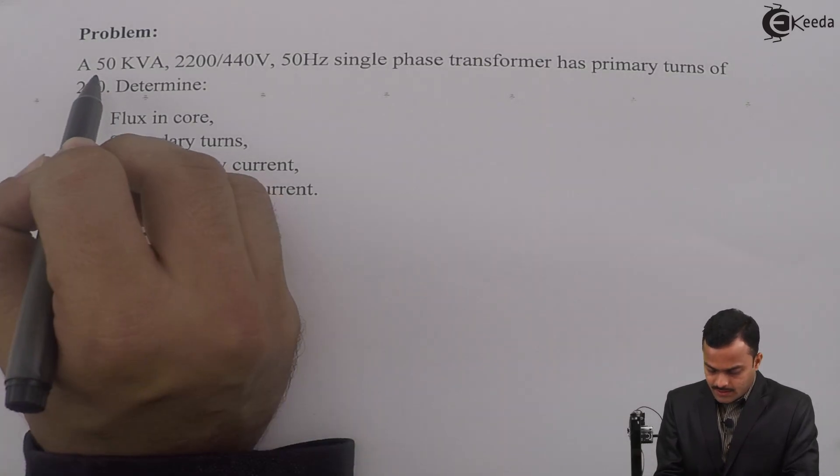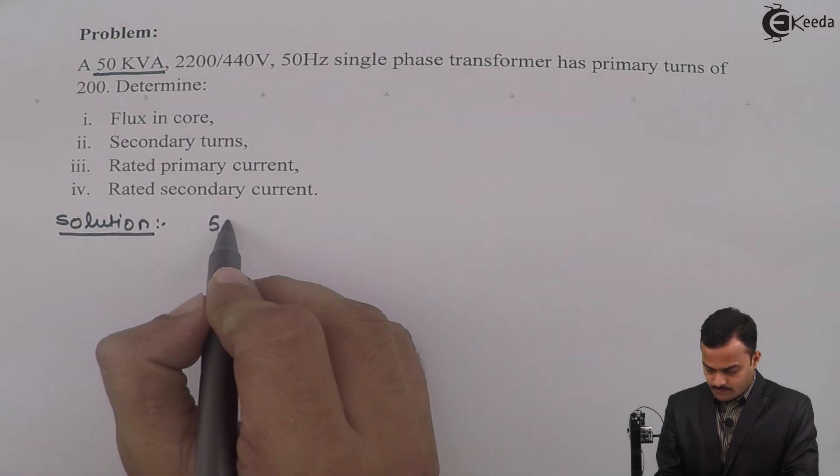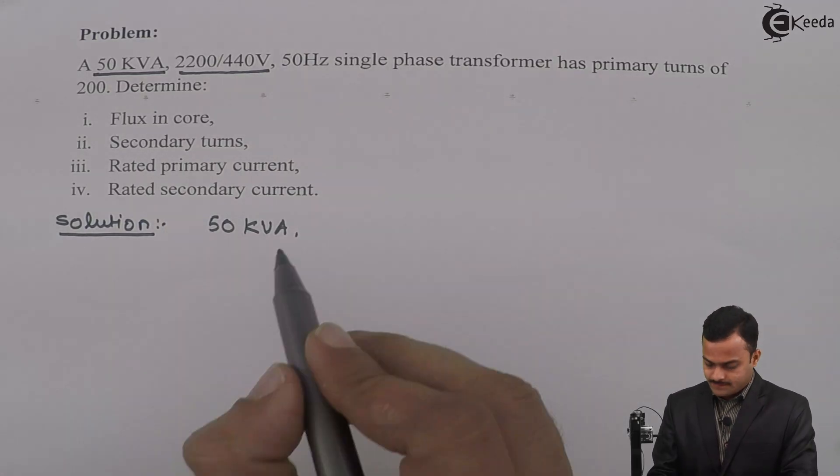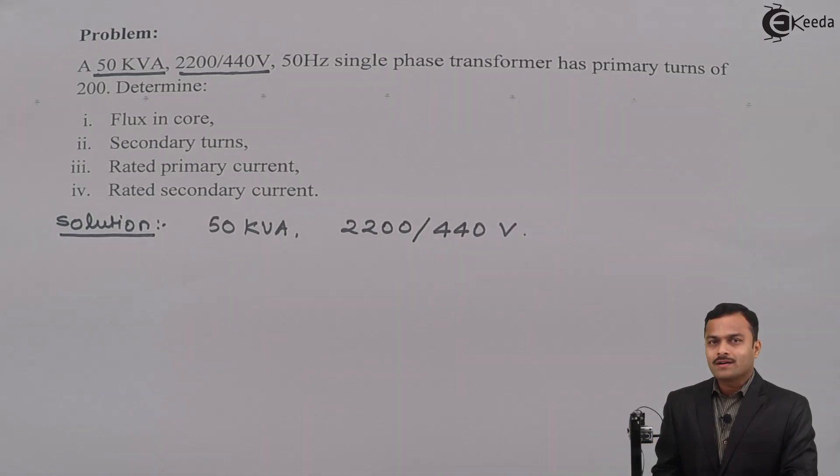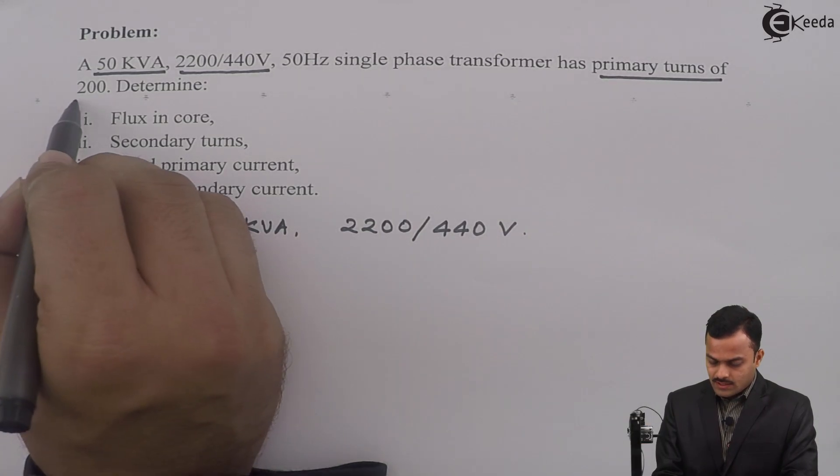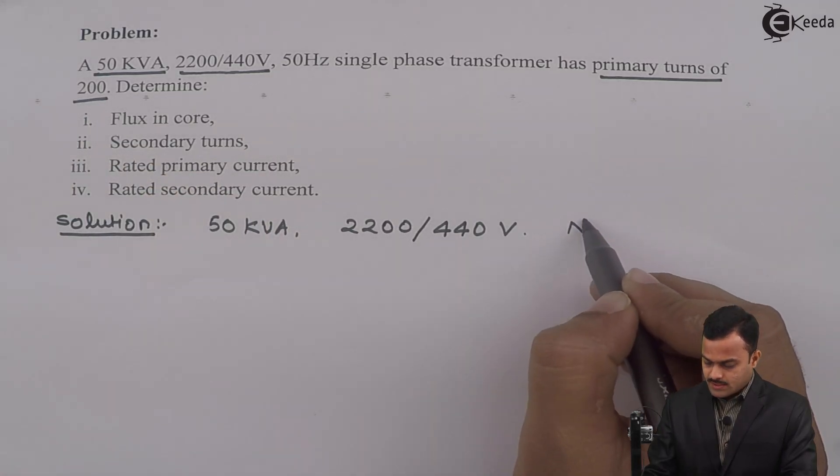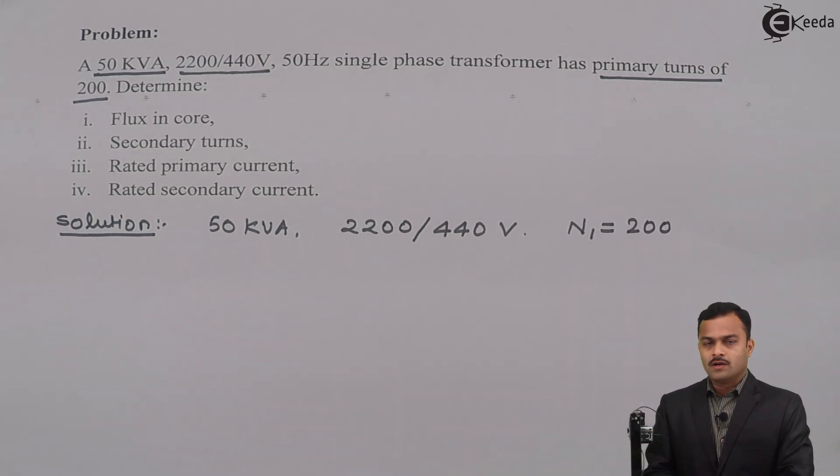Here they have given a rating of our transformer, it's 50 kVA, and voltage ratio is given. They have given primary turns which are 200. So number of turns primary side N₁ equals 200.